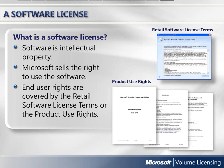Software is intellectual property that is owned by the manufacturer of the software and is protected by intellectual property laws. When a customer buys software, they are not buying the actual software code. Rather, they are buying a license with rights to use that software. The end user rights that define what can and can't be done with the software are included in either the retail license terms, previously called the End User Licensing Agreement, or EULA, for OEM or retail versions of software, or for volume licensing, the product use rights. End users agree to these terms before their first use of the software.